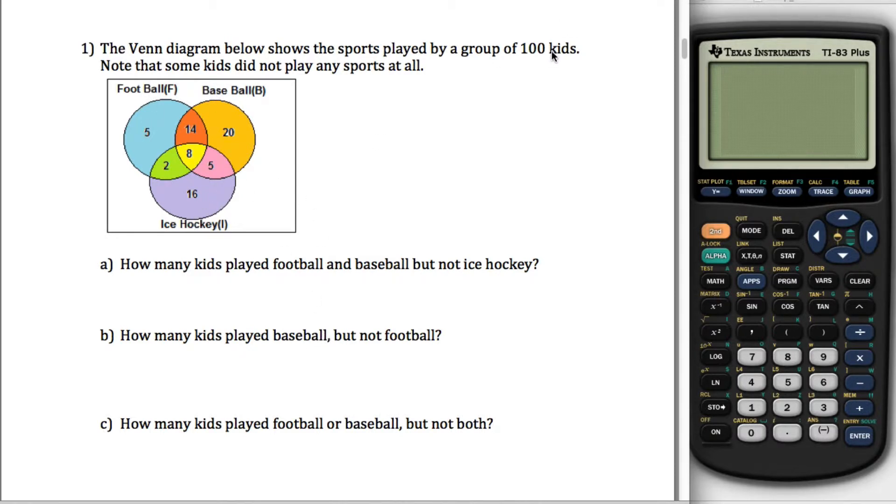Anyways, we got 100 kids total, this information, and we're asked a bunch of questions. First one, how many kids played football and baseball, but not ice hockey? Okay, so they played in this circle and in this circle, but they are not in this circle right here. Well, what a lot of people did is they looked and they saw 14 in the intersection and 8 in the intersection. And that's true, that's the intersection between football and baseball, but the 8 also played hockey. So we don't want the 8, we only want the 14. There were 14 kids that satisfied this criteria.